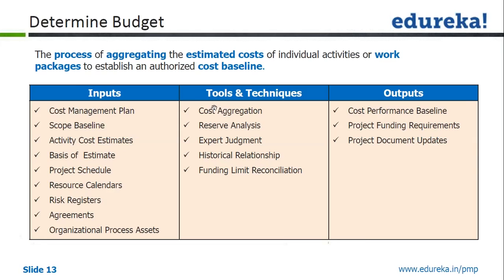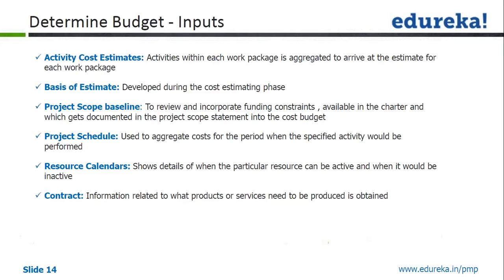The main input for Determine Budget is activity cost estimate, which will be aggregated to work package level, then to control account, and then essentially to your cost baseline. Activities within each work package are aggregated to arrive at the estimate for each work package. Basis of estimate is developed during the cost estimating phase. Project scope baseline is used to review and incorporate funding constraints available in the charter and project scope statement into the cost budget.